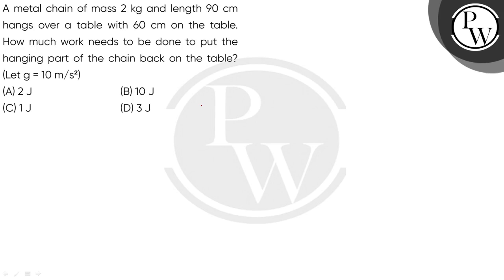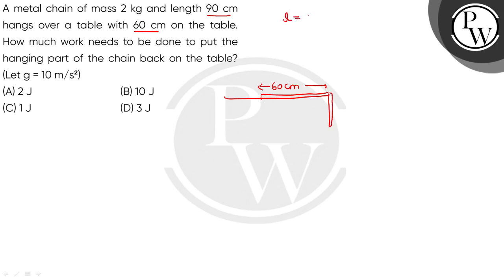This is a metal chain with mass 2 kg and length 90 cm. This is a table, such that 60 cm is on the table and the rest of the part is hanging. The total length is 90 cm, which we can say is 0.9 m.